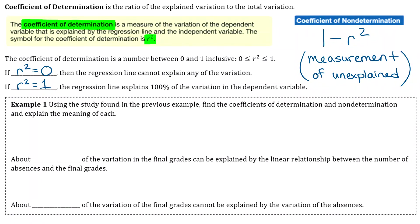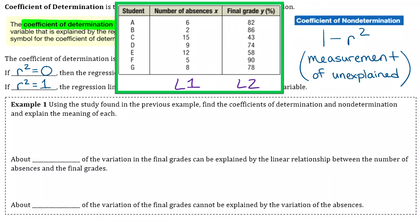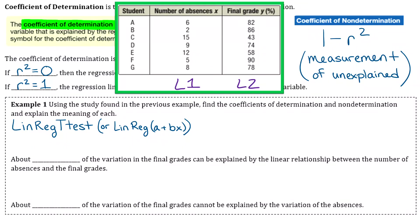Let's do an example using the study from the previous example. If you have your calculator, put the data points in now. We need to find the coefficients of determination and non-determination and explain the meaning of each. Once you have your values in L1 and L2, go to linear regression t-test, or linear regression A plus Bx. In that list of output, it tells you right there what r squared is. Rounded to three decimal places, you get 0.892.